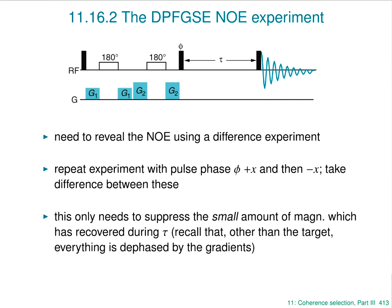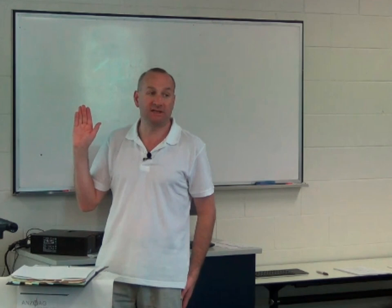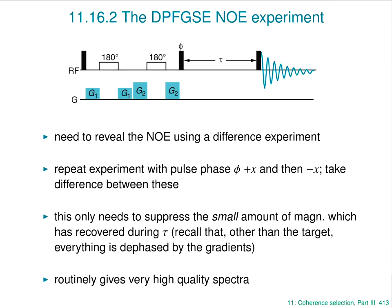The really important point is that because all the other signal is dephased, the difference you're calculating is between two rather small things. One of the problems with the NOE experiment has been that in the control experiment most peaks are full intensity, and in the NOE experiment most peaks are full intensity. Taking the difference between two large things puts a lot of stress on spectrometer stability. With this method, because almost all magnetization is dephased, you're creating a difference between two much smaller quantities. This routinely gives extremely high quality spectra, and this experiment has really revolutionized the quality you can get from 1D NOE spectra.